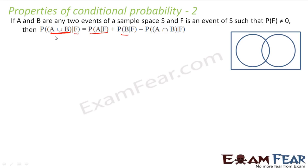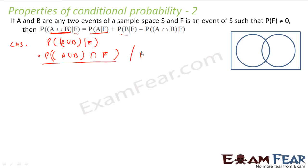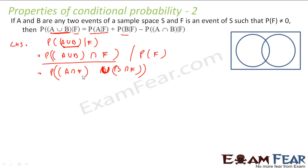To prove this, take the LHS: probability of A union B given F is nothing but probability of (A union B) intersection F, divided by probability of F. Breaking the numerator using the distributive law, this becomes probability of (A intersection F) union (B intersection F), divided by probability of F.